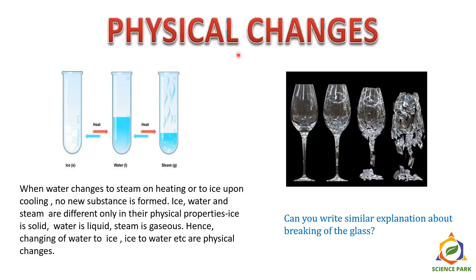Let's see some examples of physical changes. In test tube A, I have taken ice. When I give heat to ice, it changes its physical state and becomes liquid — we can see water in the test tube. Heating the water further produces steam. When water changes to steam on heating or to ice upon cooling, no new substance is formed. Ice, water, and steam differ only in their physical properties: ice is solid, water is liquid, steam is gaseous. Hence, these are all physical changes.